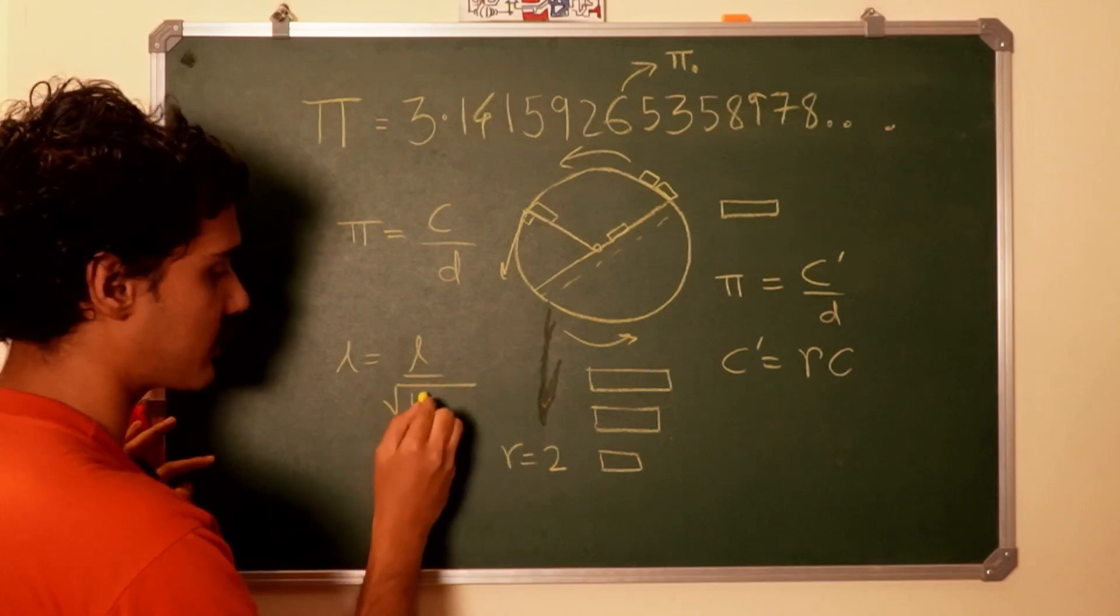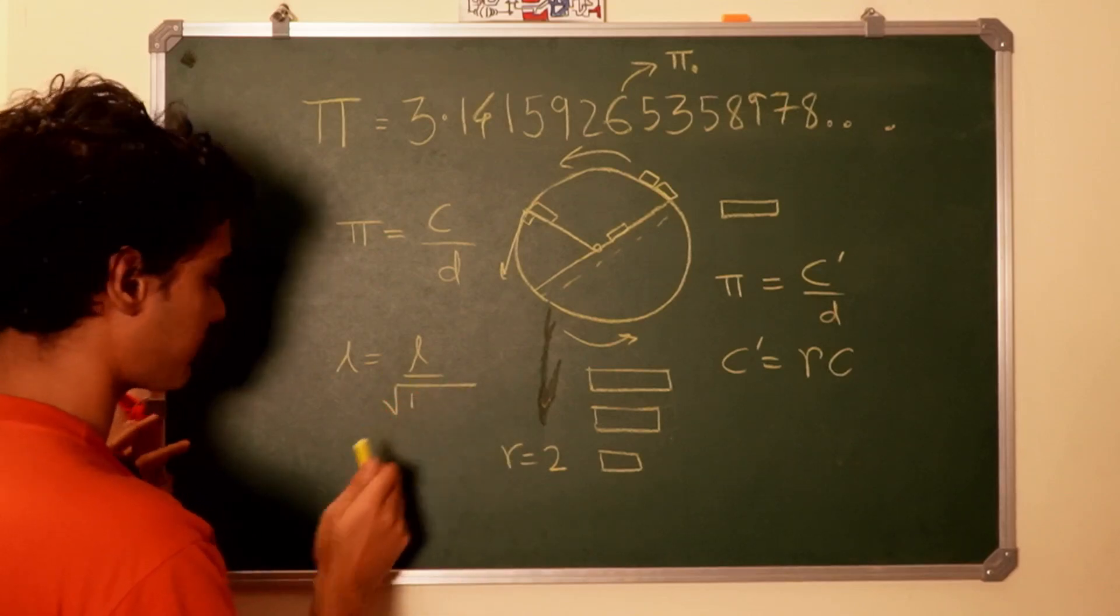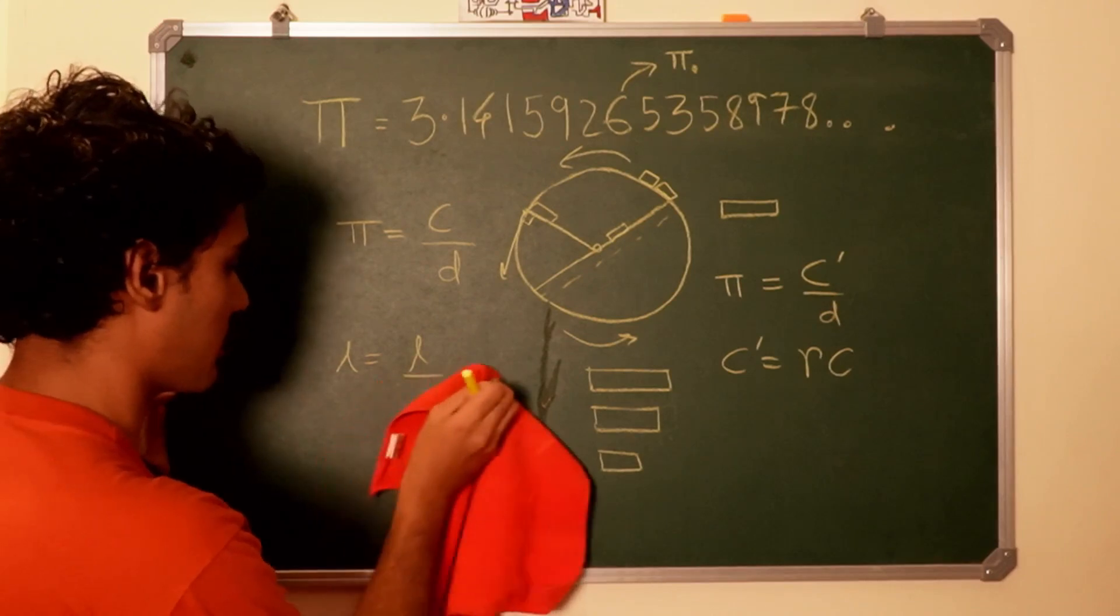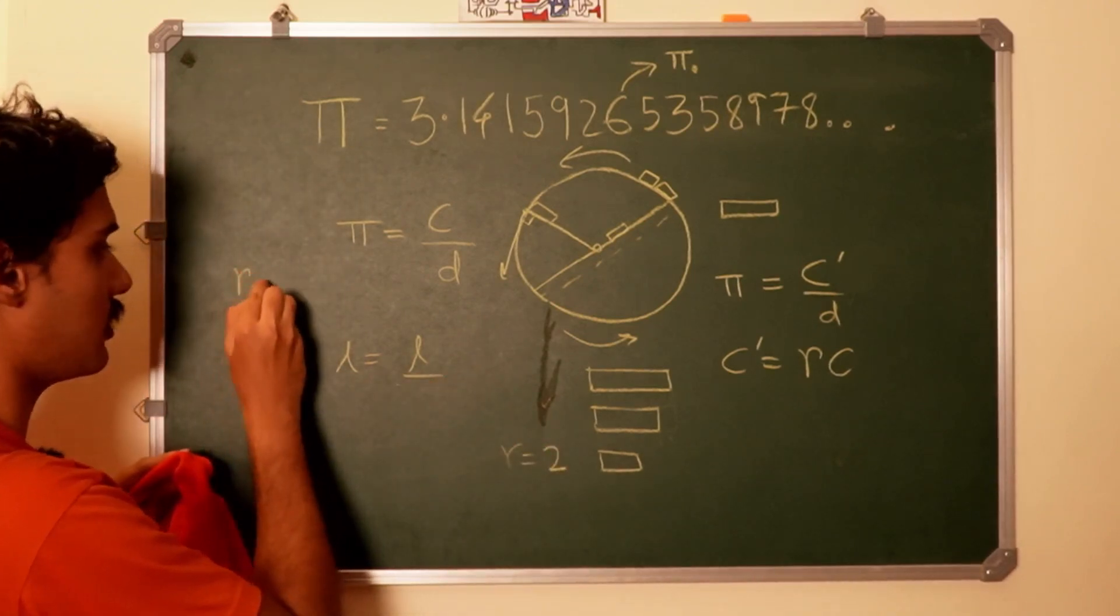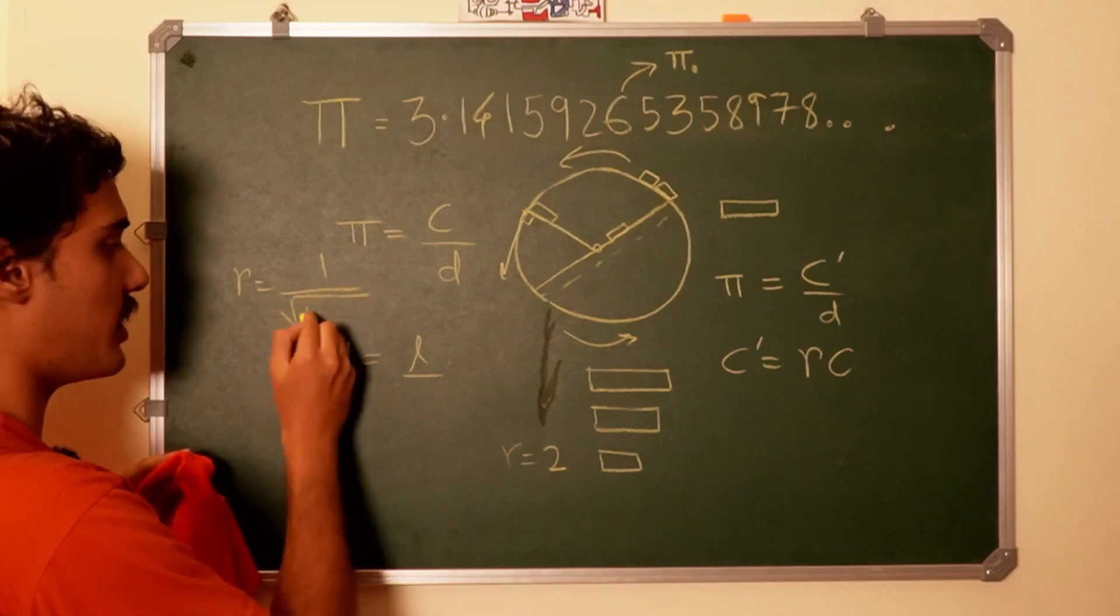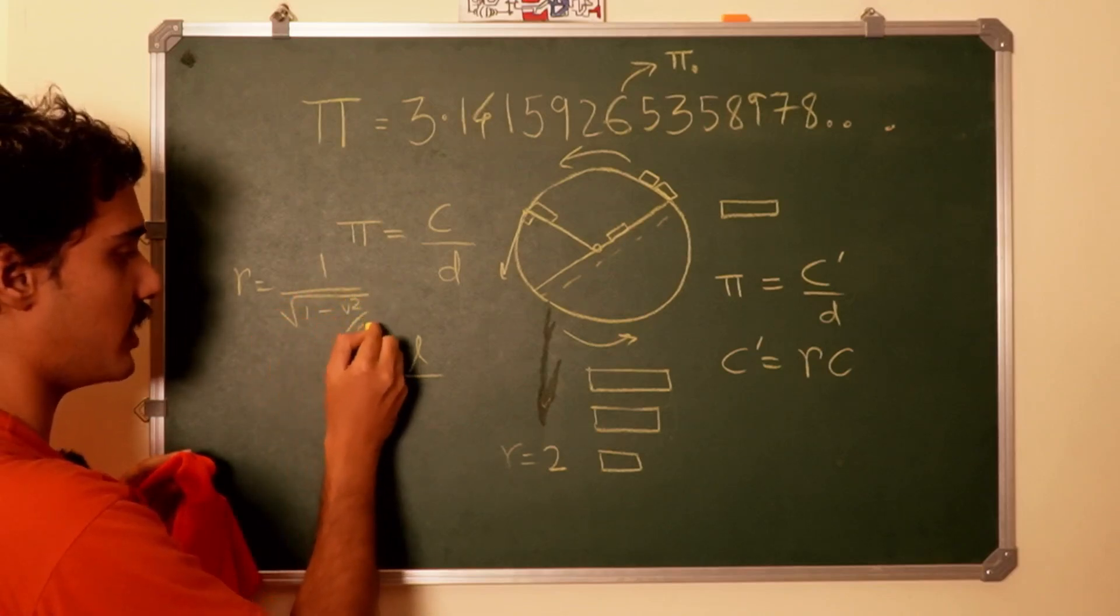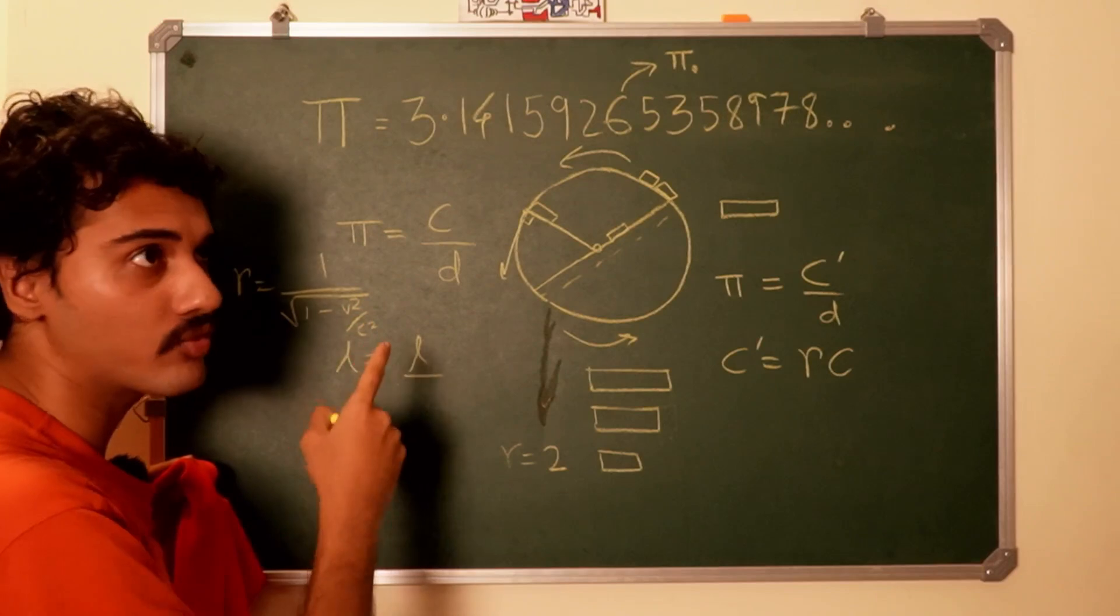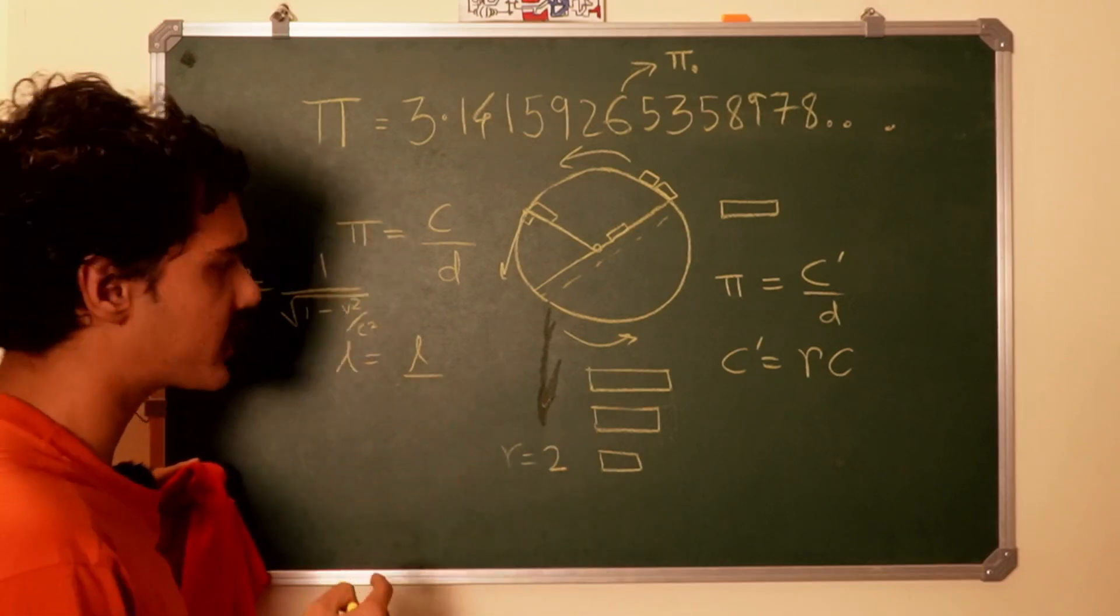And I can tell you the formula for gamma, which is—actually the formula for gamma is 1 over the square root of 1 minus v squared by c squared, where c is the speed of light or the maximum speed of causality in the universe.